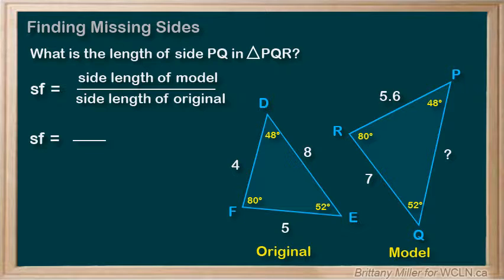I choose to find the scale factor using EF and QR, which are corresponding because they are both between the same angles. Throw them in that old formula, and I get 7 over 5, and use my calculator to see that we have a scale factor of 1.4.